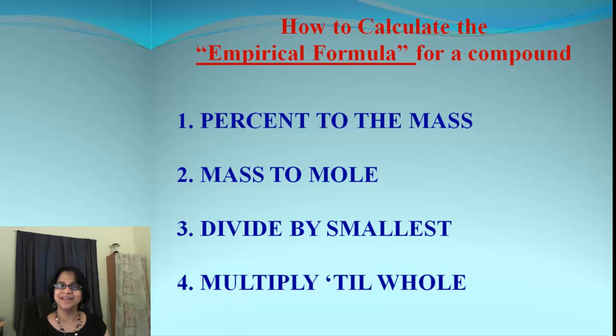Alright, let's move on with finding out empirical formula. And there are 4 steps for that. The first one is percent to the mass. Then we go mass to the moles. Then we go divide by the smallest. And then we multiply till the whole number.